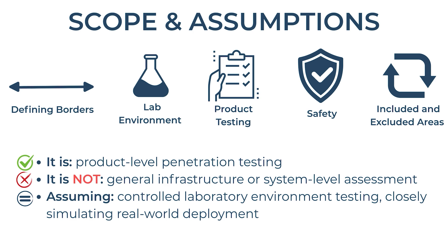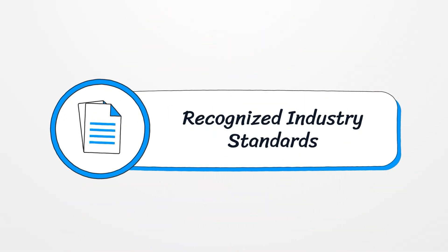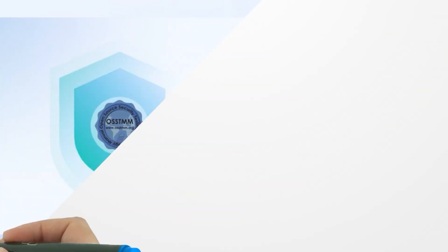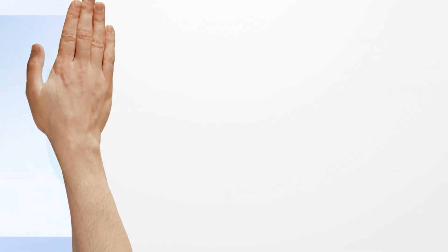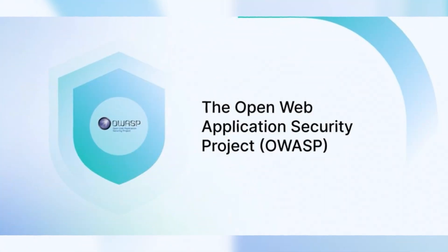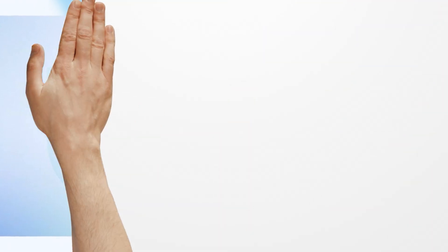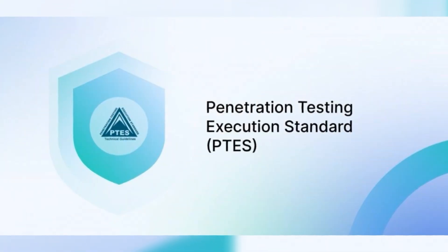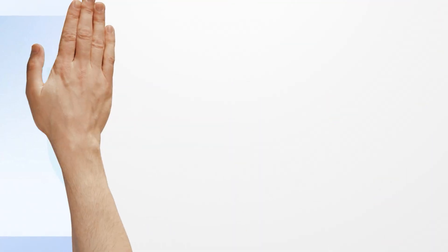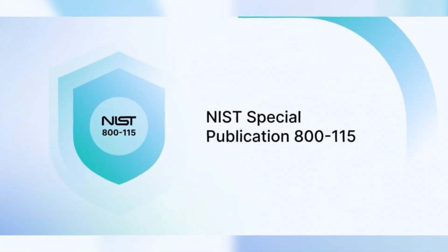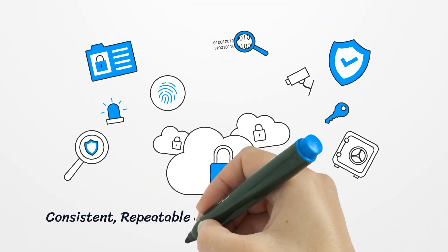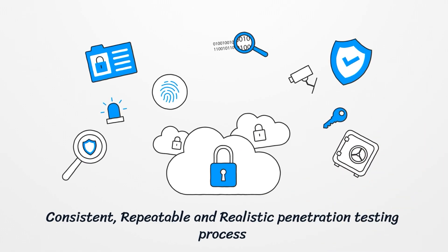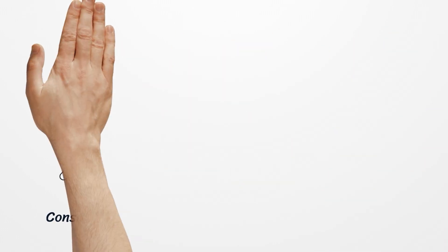We'll look at the recognized industry standards that form the foundation of our approach. This methodology integrates several internationally recognized standards. These include OSSTMM-3, which guides operational-level security audits; the OWASP testing guide, focused on web security and APIs; the Penetration Testing Execution Standard, or PTES, which ensures structured engagement processes; and NIST SP800-115, providing best practices for impact evaluation. These combined frameworks ensure our process is consistent, repeatable, and realistic. In addition, our approach has been designed to be fully aligned with CRA obligations.